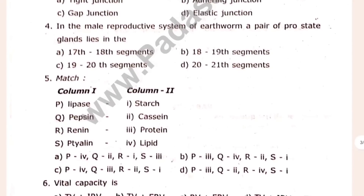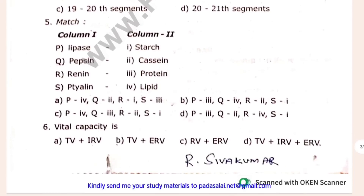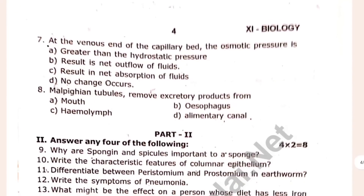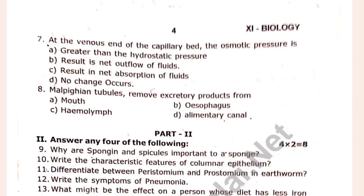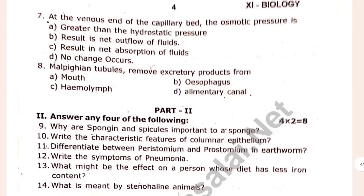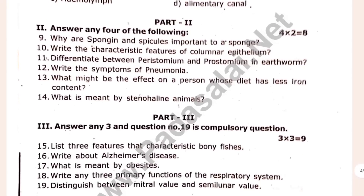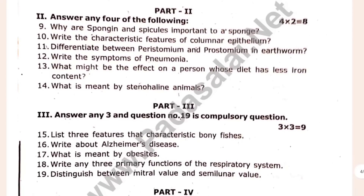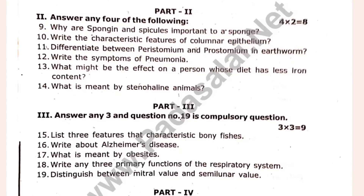In the male reproduction system of Yath Wam — the male reproduction system. Marks breakdown: 1 mark, 2 marks, 2 marks, 2 marks, 3 marks and 3 marks. You can see the difference between the material and the semi-lunar valves.